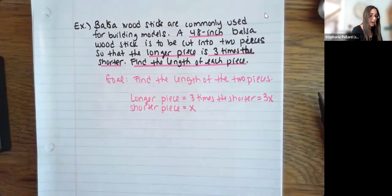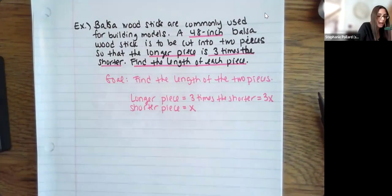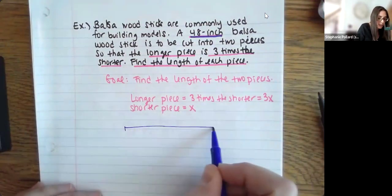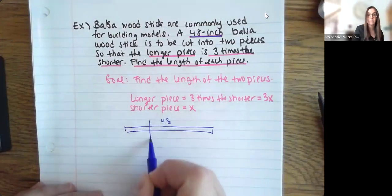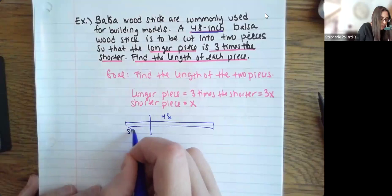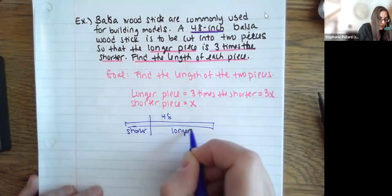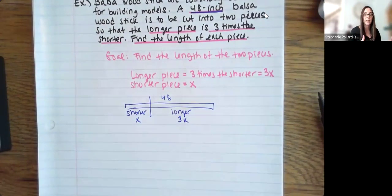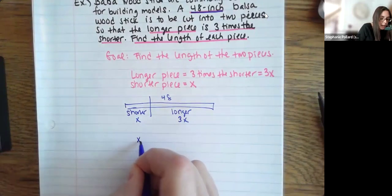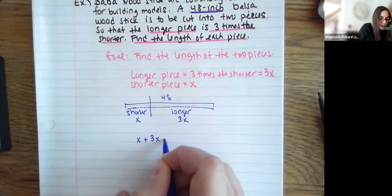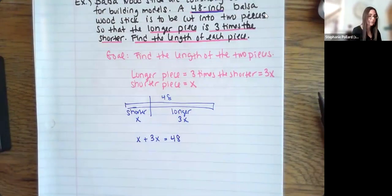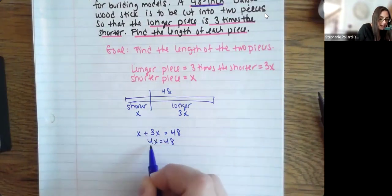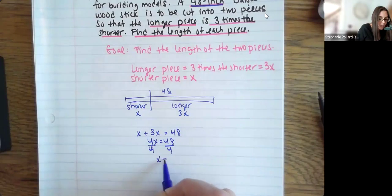The other thing I know is that these two pieces together have to add up to 48 inches. So I'm taking a 48-inch stick, cutting it — this could be my shorter piece x and this could be my longer piece 3x — and the total between these two pieces has to be 48. So x plus 3x has to equal 48 inches. x and 3x is 4x, and dividing by 4, x is equal to 12.